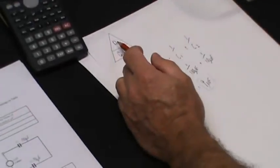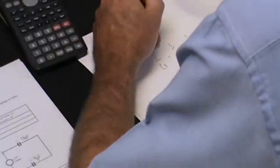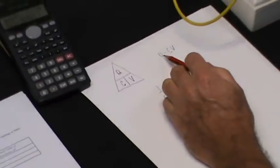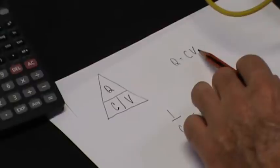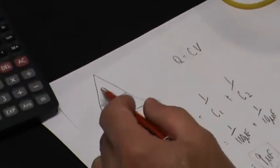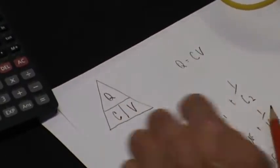The formula for capacitance Q equals C times V. Q is the charge in the circuit, the amount of coulomb charge. Capacitance C is the capacitance in farads, and V is the voltage in volts. As we've seen before, the old triangle method: Q, C, V.